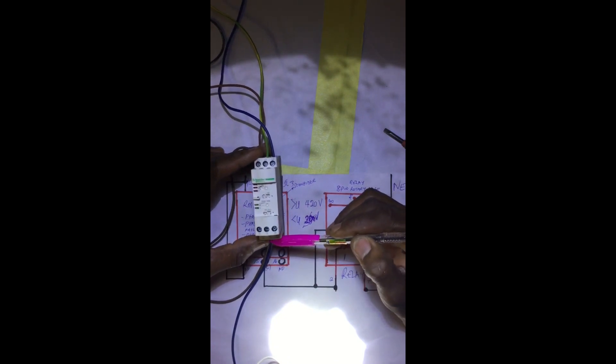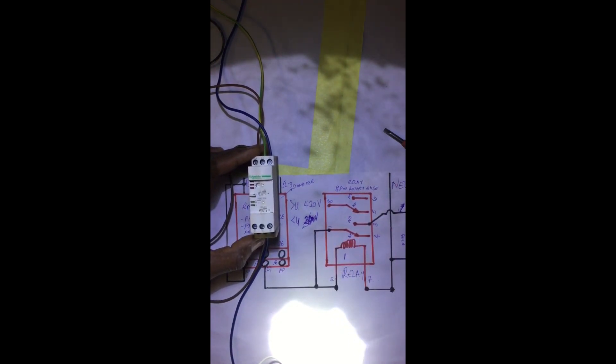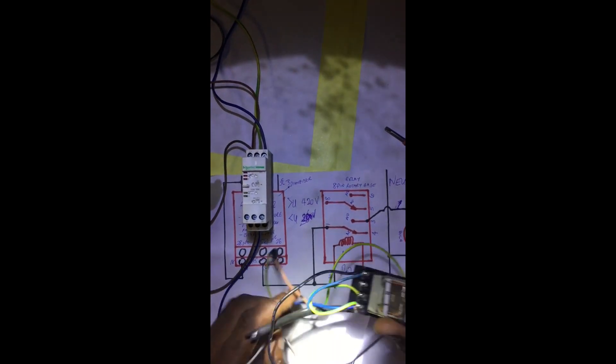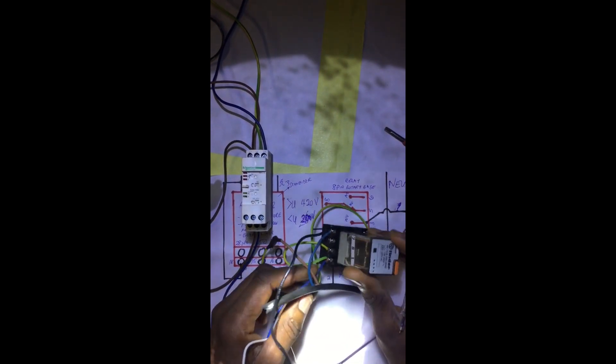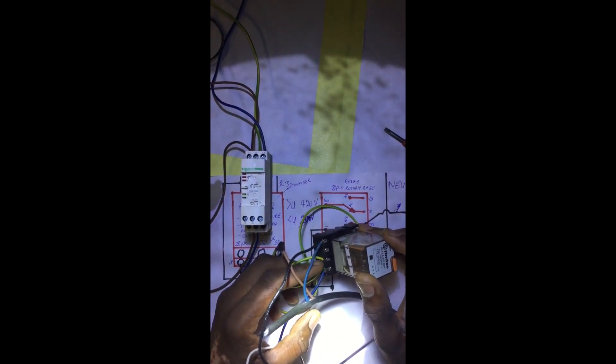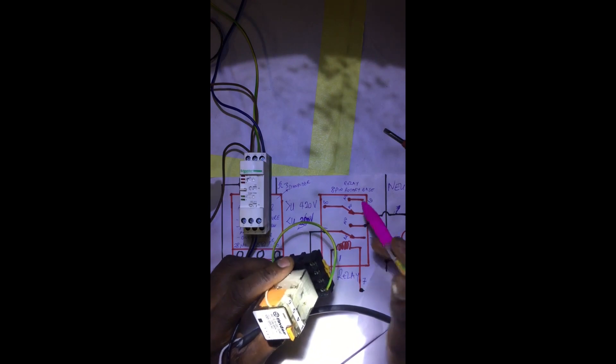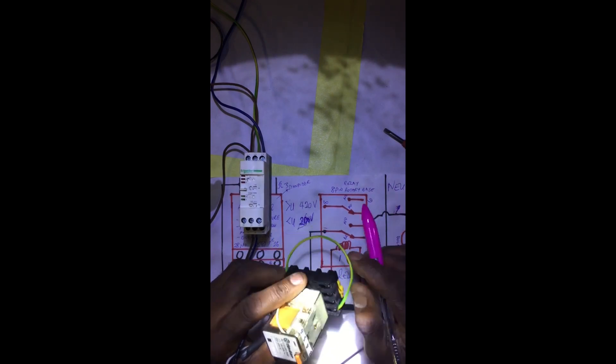The output on terminal 15 is taken to the relay terminal 1, and terminal 2 on the relay, which is this. This is our terminal 1, terminal 2. Terminal 1 on the relay is looped here.